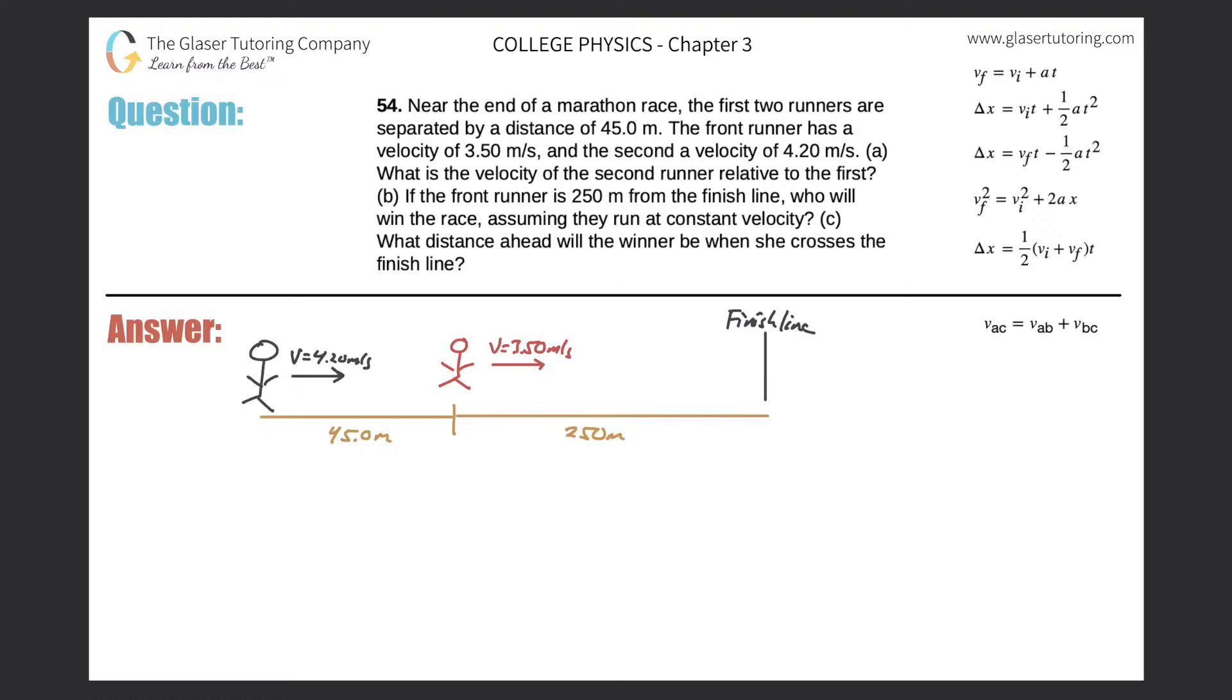Number 54. Near the end of a marathon race, the first two runners are separated by a distance of 45 meters. The front runner has a velocity of 3.5 meters per second and the second a velocity of 4.2 meters per second. Letter A: What is the velocity of the second runner relative to the first?